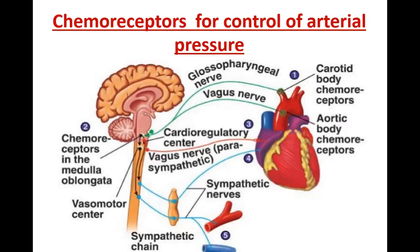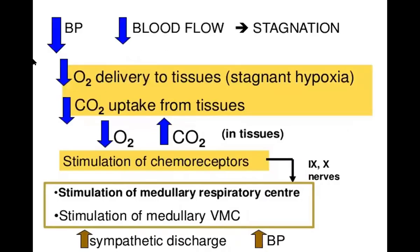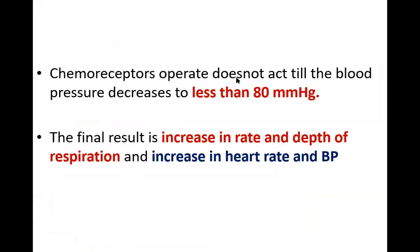Whenever the opposite scenario occurs, it will cause stimulation of the parasympathetic nervous system. Whenever there is decrease in blood pressure causing decrease in blood flow and stagnation, oxygen delivery to tissues decreases and carbon dioxide starts accumulating, so chemoreceptors are stimulated — stimulating the medullary vasomotor center (pressure area), causing stimulation of the sympathetic nervous system. Chemoreceptors do not act until blood pressure decreases to less than 80 mmHg; only after that do chemoreceptors start showing their action.